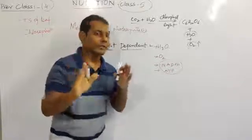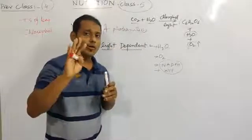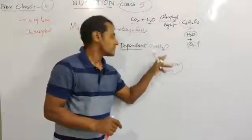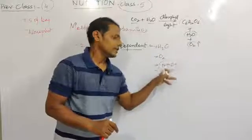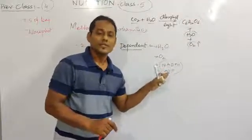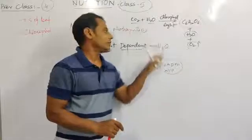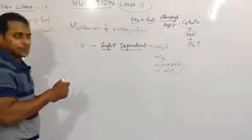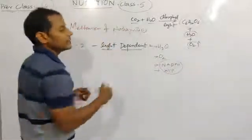So in light dependent reactions, four compounds are involved: water as input, oxygen as output, NADPH, and ATP as the final products.